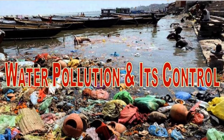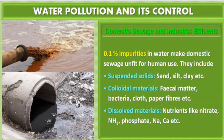So water pollution - how do we define it? Water pollution is defined as an undesirable change in water making it unfit for human consumption and for the survival of the aquatic fauna and flora. Fauna means animals; flora means plants. Such water which is unfit for the survivability of flora, fauna, and human beings is said to be water pollution.